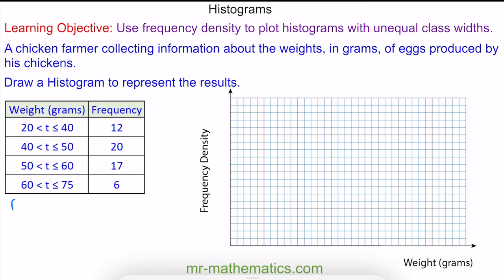Again, we measure the frequency as an area because the class widths are not equal. This will be a product of the weight, which is in grams, multiplied by the height, which is frequency density. To work out the frequency density, we divide the frequency by the class width of the weight.